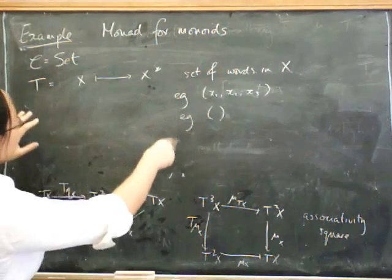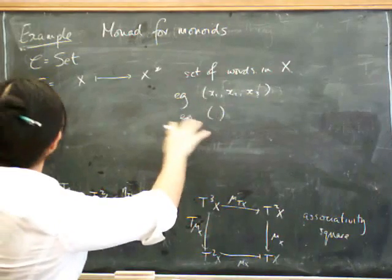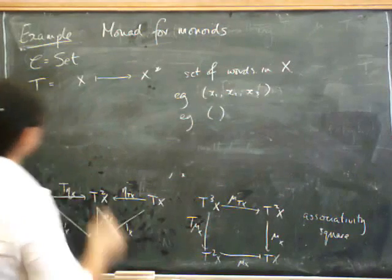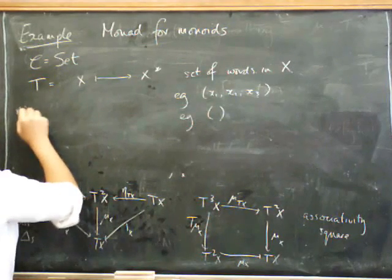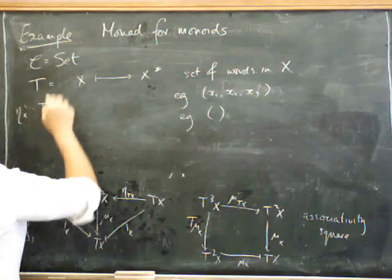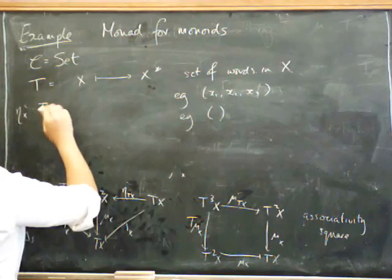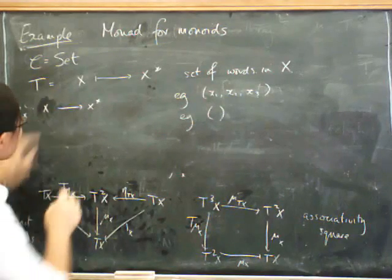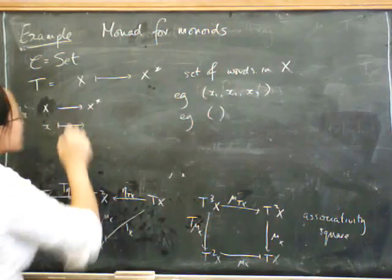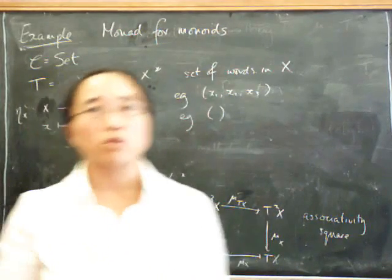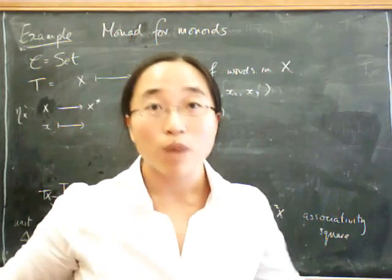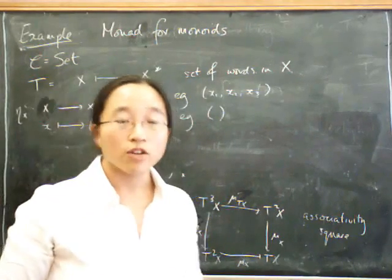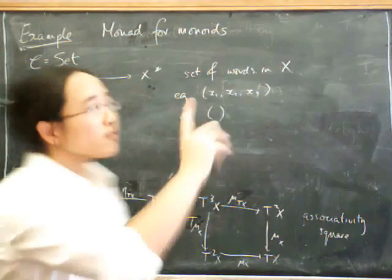Now, to finish defining this, now we can extend this to a functor. What we've got to do is define the eta and the mu, the unit and the multiplication for this monad. So what's eta going to be? Well, eta of x, remember, is a morphism, so it's a function, going from x to T of x, which is x star. So we take an object of x, we have to send it to some list of elements of x. Now what can we possibly do? All we've got is one element. So we just have a one element list. So it's the word of length 1 consisting of just x all by itself. Not a very interesting list, but a very important one nonetheless.